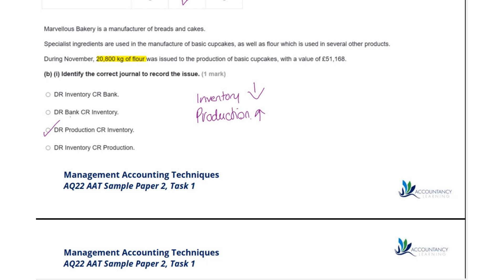Remember to always identify the type of account. For inventory it's an asset account — as we're decreasing the asset, it has to be credit inventory. By process of elimination you can work out the other side. If you're still stuck, work it out from one side: know what your debit is or know what your credit is, then use the rest of the question options to help you.